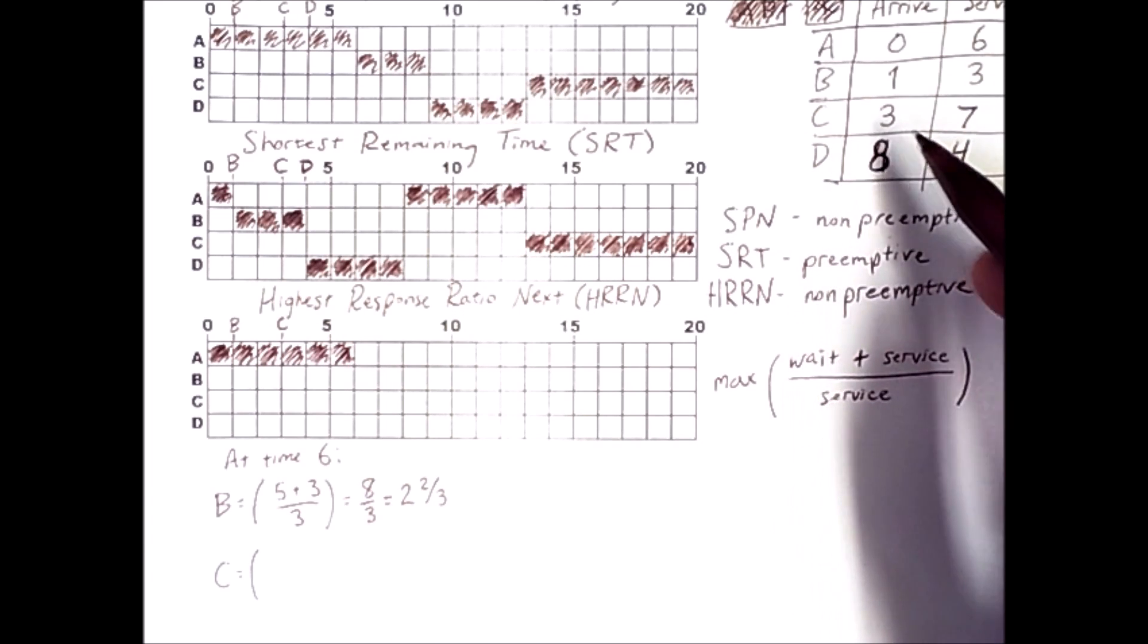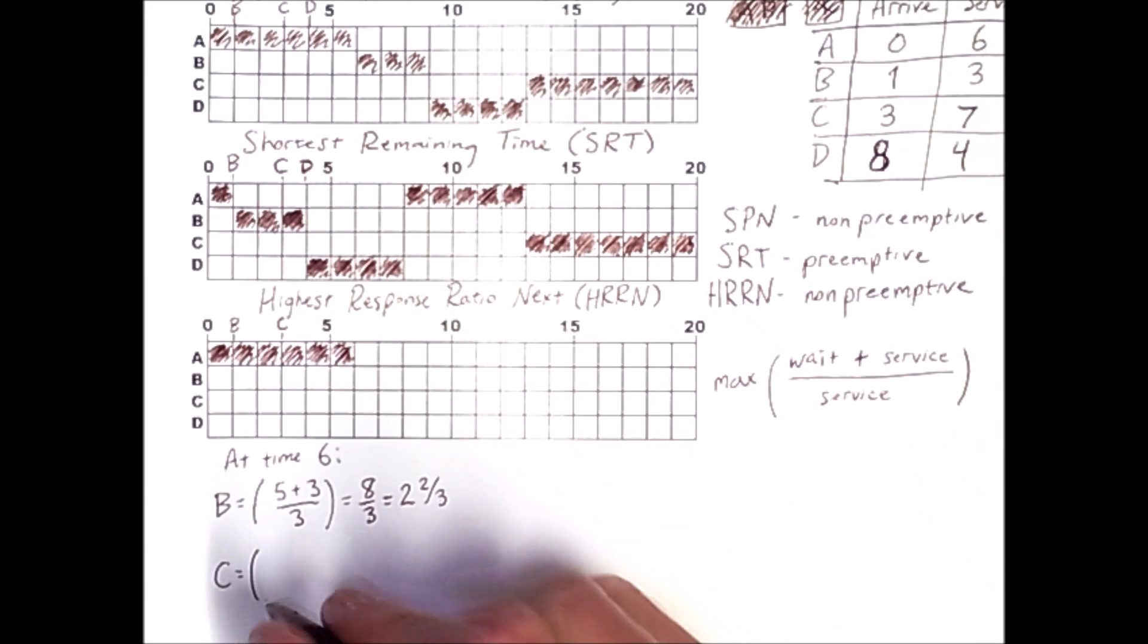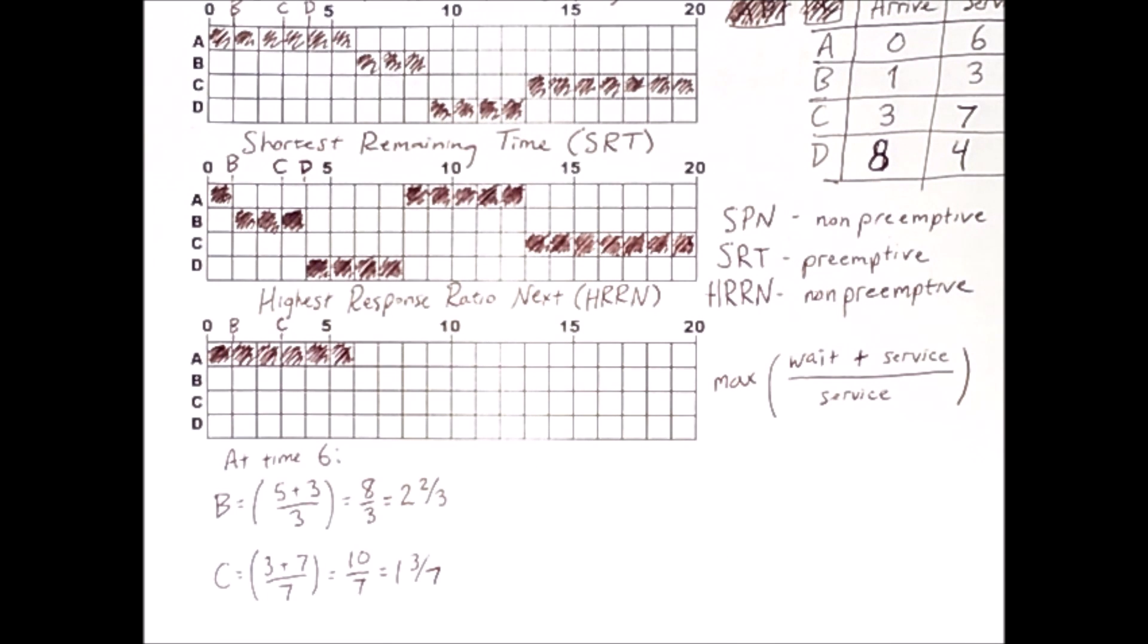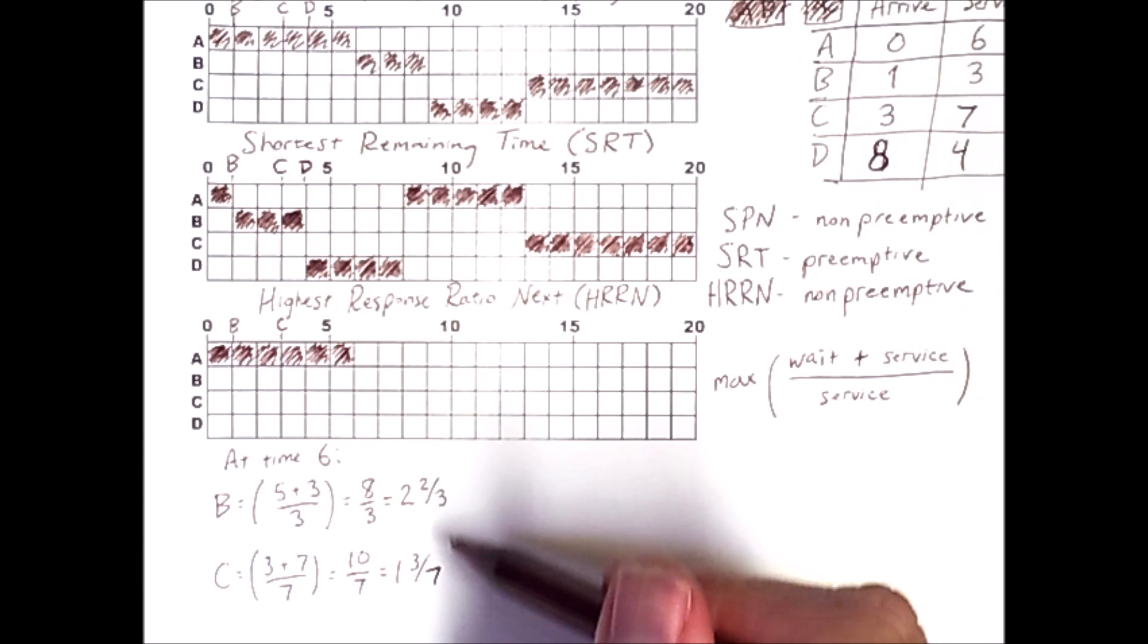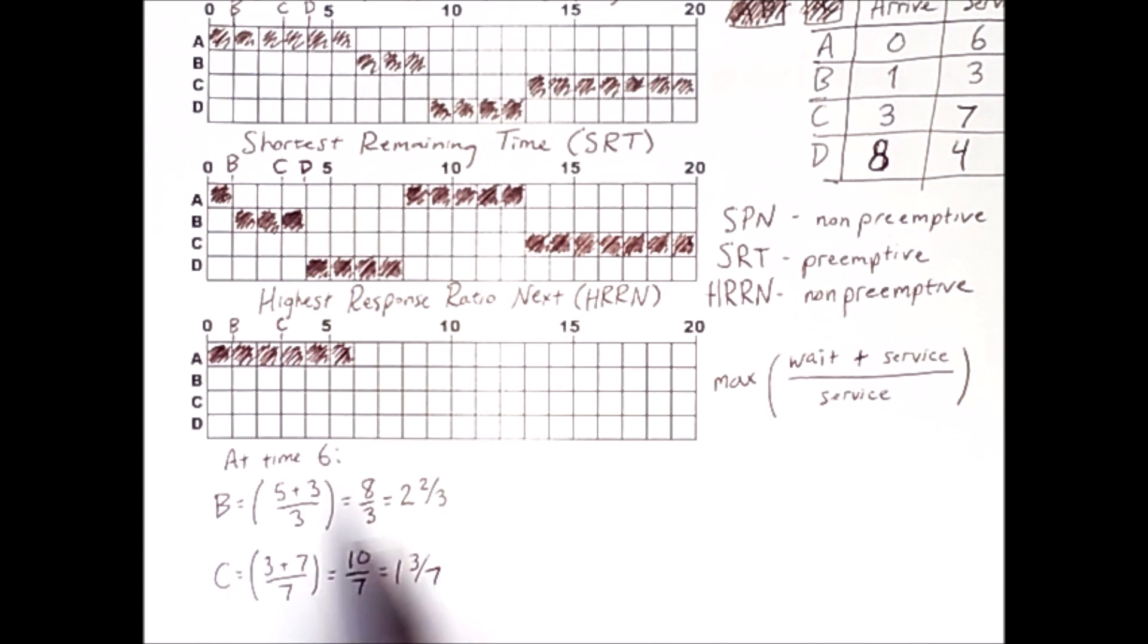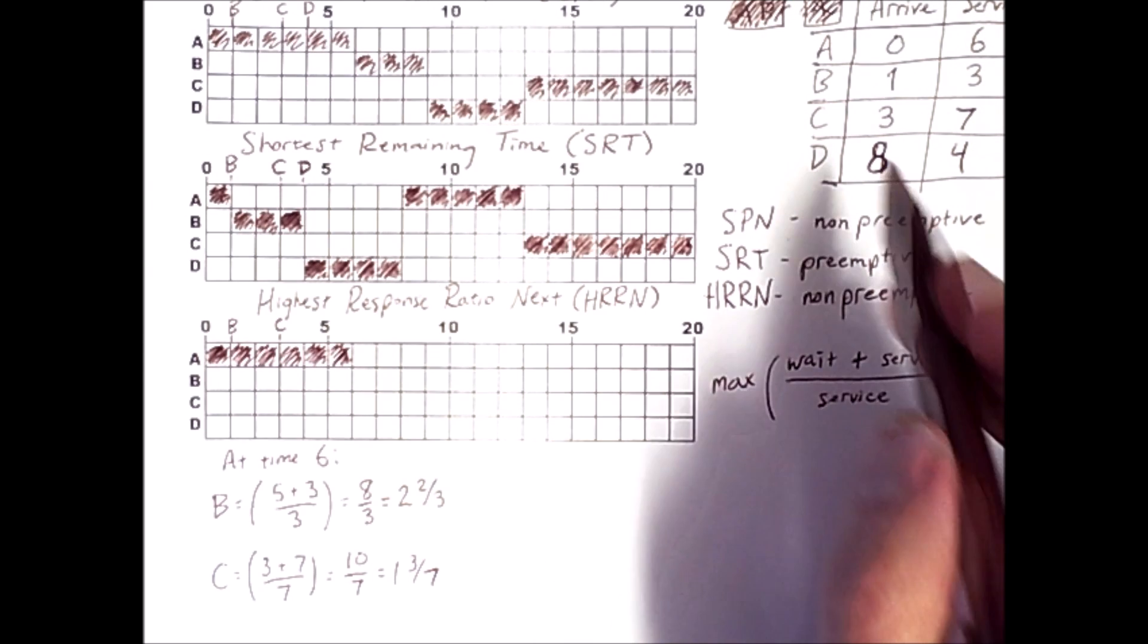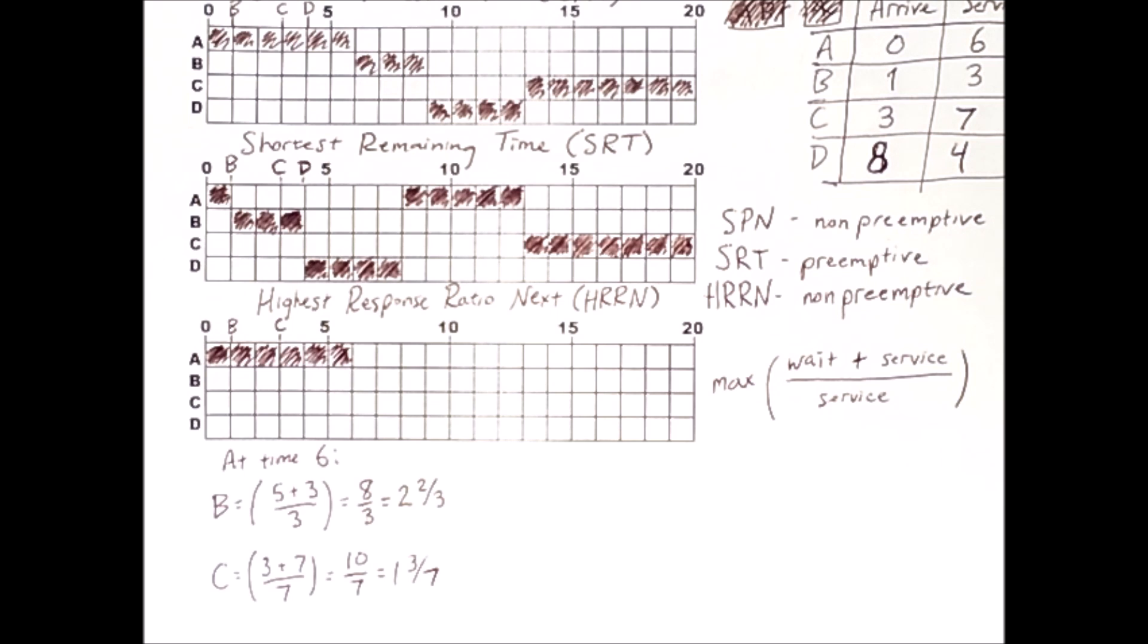We'll do the same calculation for C. C arrived to time 3. So 6 minus 3 is 3 wait, its service time is 7. And D has not arrived yet. So between these two, B is clearly the maximum. So B gets to run next. And because HRN is non-preemptive, B will run for its full three time units.